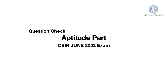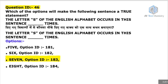We are going to do a question check for the aptitude part of CSIR UGC NET June 2022 exam. The first question you requested a lot was Question ID 46. This question is actually so easy that chances of making a mistake are very high. The question asks which option will make the following sentence a true statement. The correct answer given was option ID 183, which is 7.